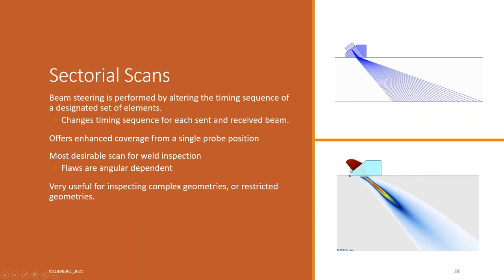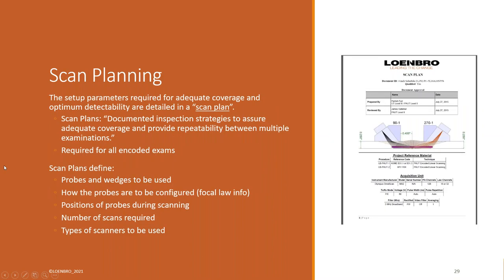Sectorial scans are multi-angle scans. And the beam steering is simply done by just altering when the timing of those elements are fired. So from one position, we can sweep a beam, say, 40 to 70 degrees at every one degree, every half degree, or if you want to get fancy, you could even do every quarter of a degree. So from a single position, you get better coverage overall than you would with an electronic scan. And what we know is, especially in weld inspection, is that flaws are angular dependent. And it goes back to that reflectivity stuff we were talking about earlier. So I want to hit flaws at the most perpendicular angle as it's possible to optimize my ability to get a return signal.